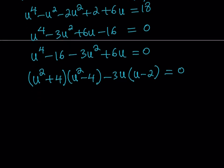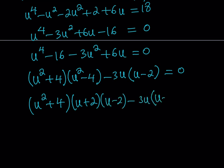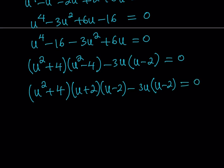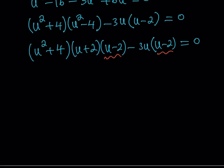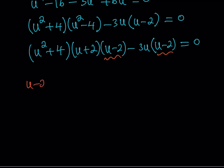So we're going to factor further. So let's go ahead and do this. u squared plus 4 multiply by u plus 2 times u minus 2, minus 3u multiply by u minus 2 and the whole thing is equal to 0. So since we have a common factor here, which is u minus 2, we can basically factor that out. So let's go ahead and factor the u minus 2 out.